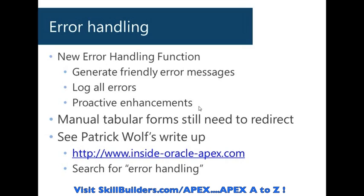All right, so I'm going to be talking about error handling. It is something that has been lacking a little bit in the APEX framework for a while, and I think they really hit the nail on the head in 4.1 with releasing this new error handling function. If you are already on 4.1 and you have not implemented this yet, this is the first thing you should do. If you're going to 4.1, after you upgrade, this should be the very first thing you do. That's how important I think this is.